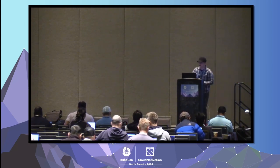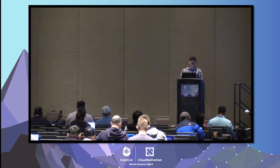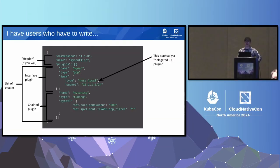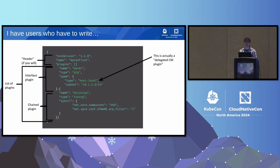The thing I was running into is I have users that have to write CNI configurations, and if you haven't seen one before — well, here it is, and it might look totally foreign to you. That's okay — you actually don't have to totally understand it. I thought, this is a problem in my area, and maybe there could be something that could assist with this. So let's see about automating this a little bit, trying to get an LLM to put these configurations together.